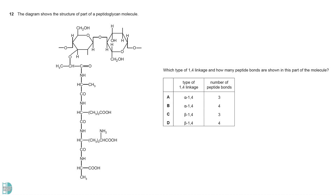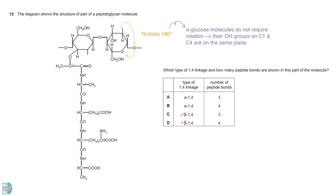It is a beta-1,4 glycosidic bond, as the second monosaccharide has rotated 180 degrees. Alpha glucose molecules do not require rotation, as their OH groups on carbon 1 and 4 are on the same plane. We can count the number of peptide bonds by counting the C-O-N-H in the figure.